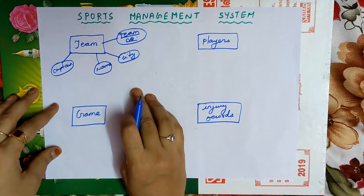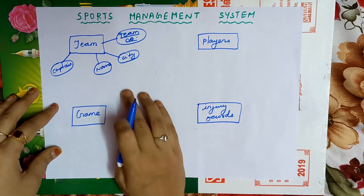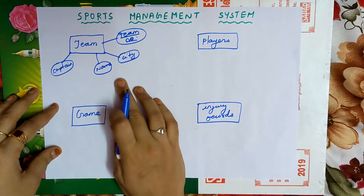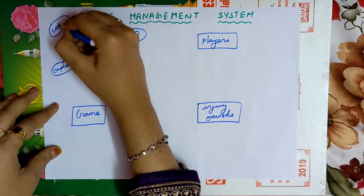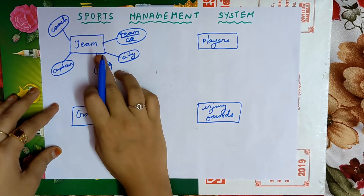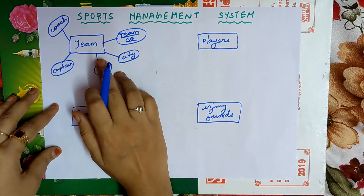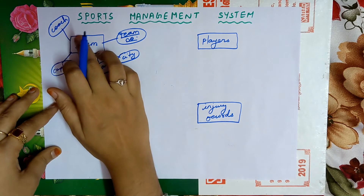Next is name of the team. Every team will be given a name — in the IPL we have Chennai Super Kings, Punjab Kings, and so on. So team name is an attribute. Every team will also have a coach who trains the team for a particular game, so coach is an important attribute.